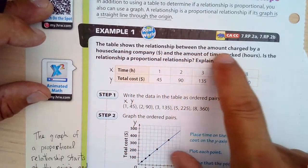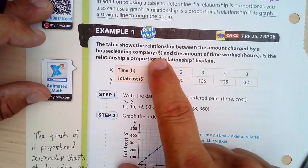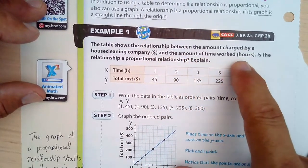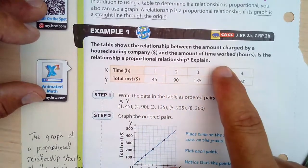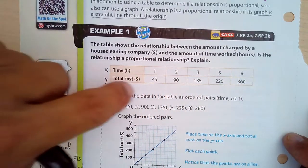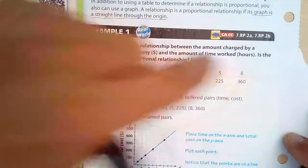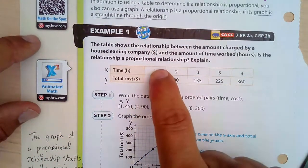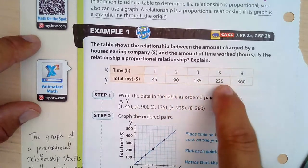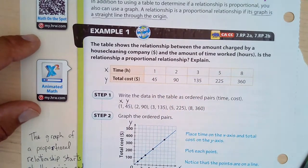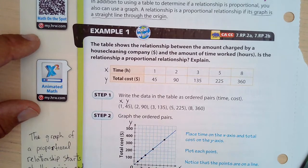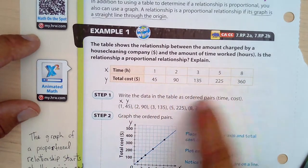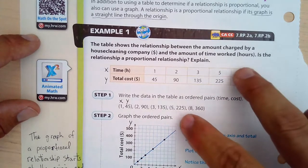This table shows a relationship between the amount charged by a house cleaning company in dollars and the amount of time it worked in hours. Is the relationship a proportional relationship? We have each XY value here and we're going to write that in ordered pairs. We have 1, 45; 2, 90; 3, 135; 5, 225; and 8, 360. They correspond to the table here.